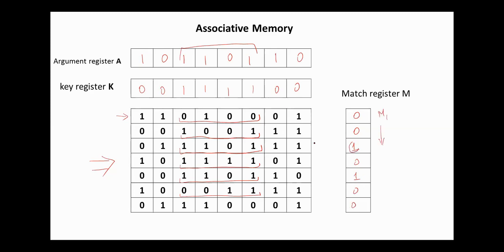So we retrieve the content of this location and the content of this location as well. The search is done in all locations at the same time and in parallel since the search is implemented using hardware, so the contents of the match locations are retrieved very quickly.